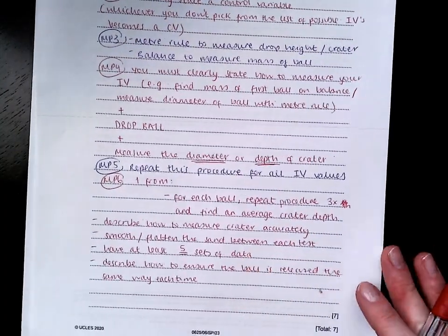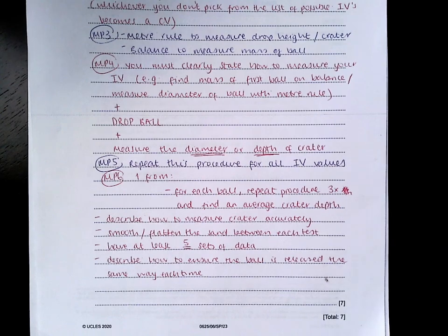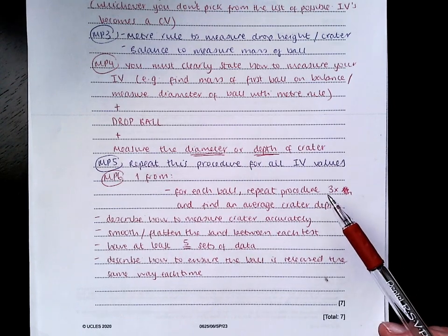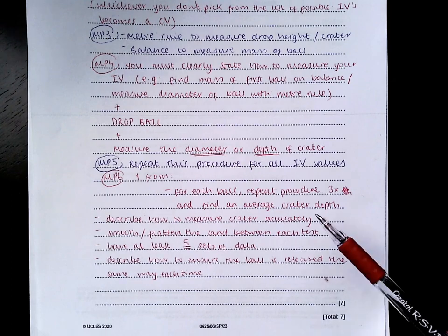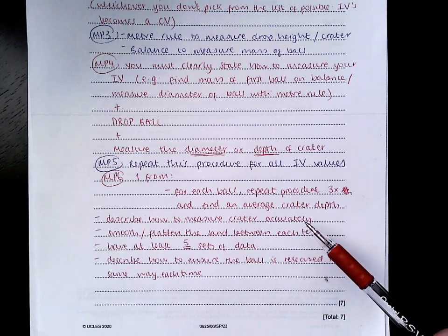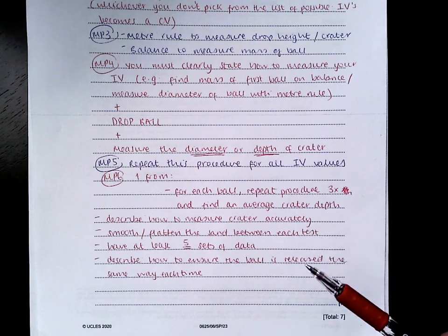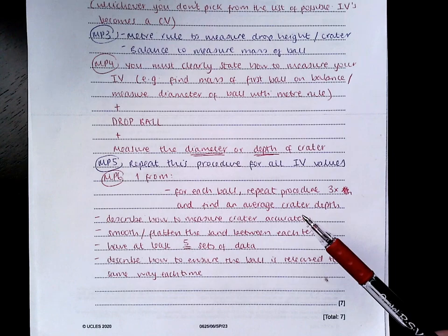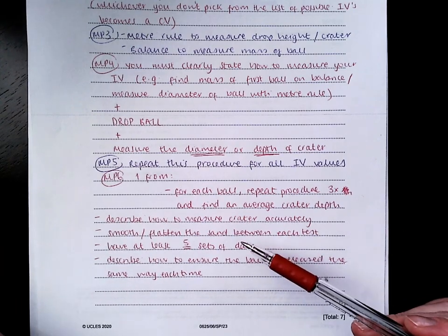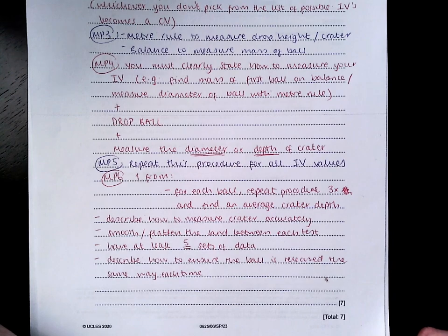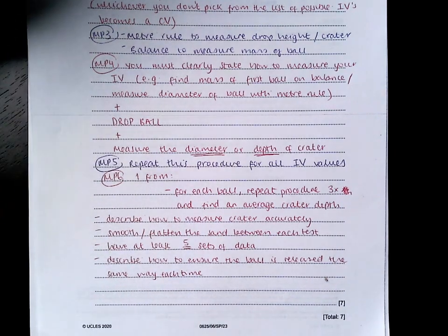For mark point six, it was like a bonus mark for some additional details. You could for each value of independent variable, take three repeats, but then you didn't get the mark because you forgot to say that you then find an average from those repeats. If you gave me very specific detail about how to measure the crater accurately, that might have got you mark point six. Smooth or flatten the sand between each test would have got you your mark point six. Showing me that you're testing at least five different values of independent variable, mark point six. Ensuring that you drop the ball with no force so that it's released the same way each time, also.